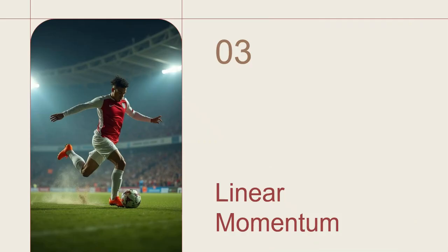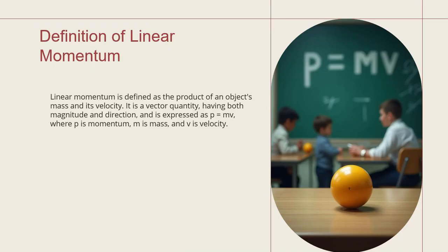The third topic we discuss today is linear momentum. How to define linear momentum? The product of an object's mass and its velocity. It is also called a vector quantity because it has both magnitude and direction. Linear momentum is expressed as P equals mv, where m is mass and v is velocity. A most important formula.